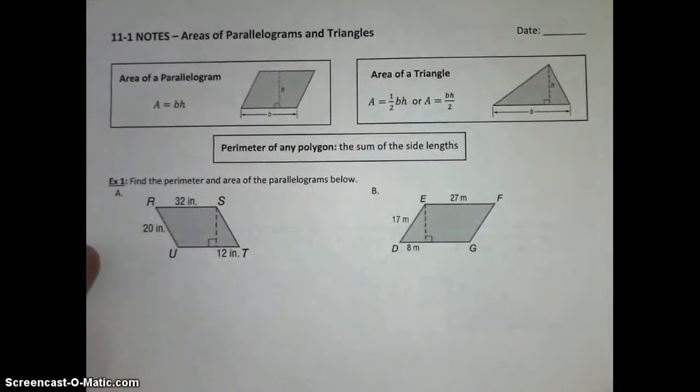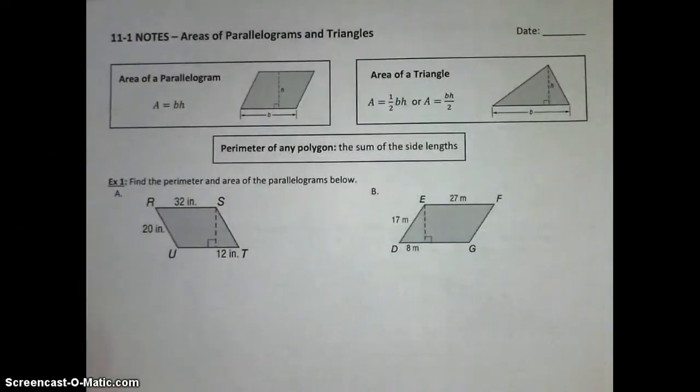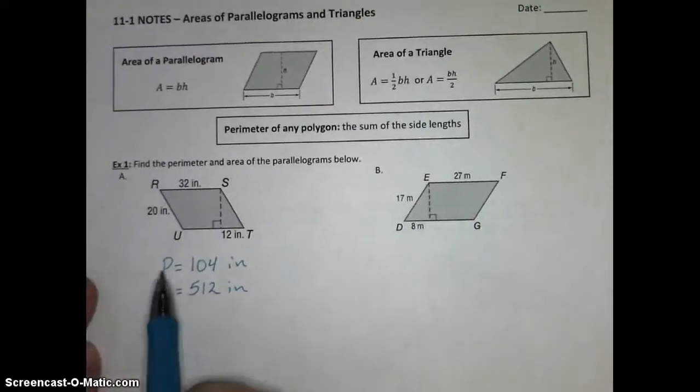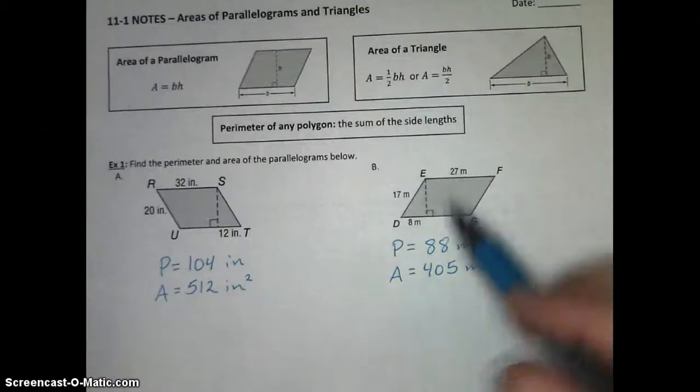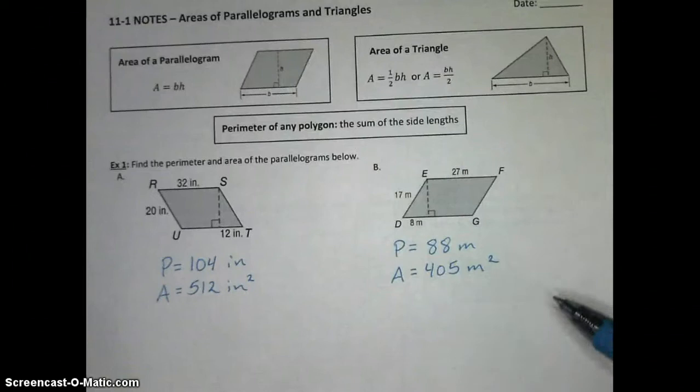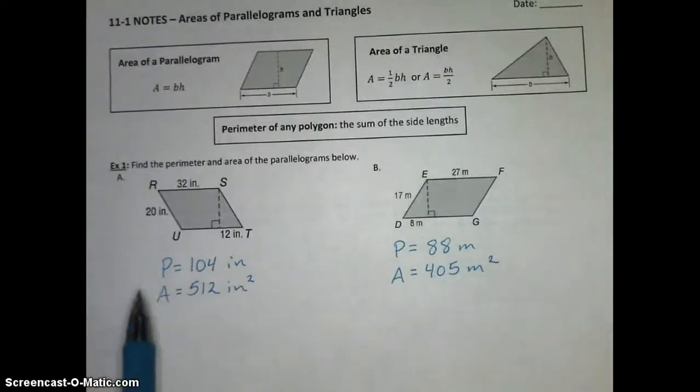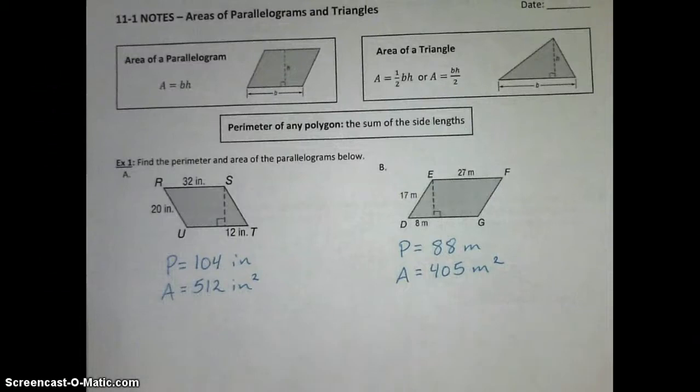So here are the answers you should get for Example 1a and b. And then once you check those, I'll walk through how I got each one. For Example 1a, the perimeter of the parallelogram is 104 inches and the area is 512 square inches. And for 1b, the perimeter is 88 meters and the area is 405 square meters. So let's take a look at how we would do that. If you're confident you know how you got these answers and you got them right and you feel comfortable moving on, go ahead and skip to Example 2.